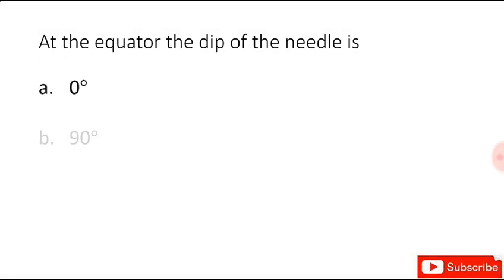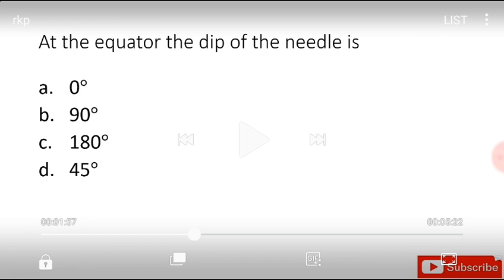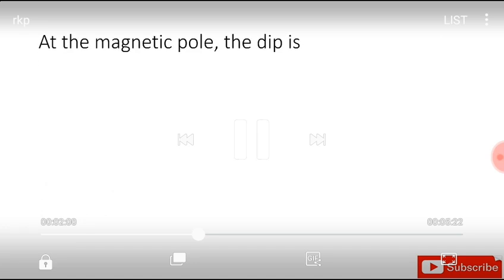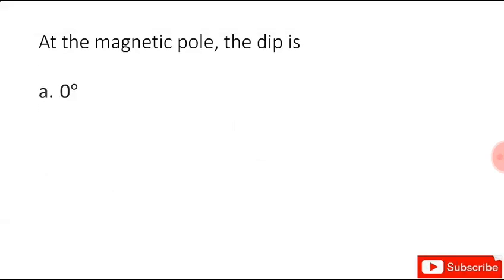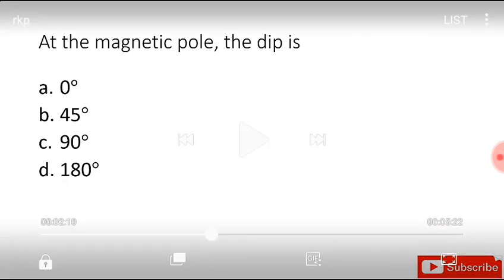And at the magnetic pole, the dip is 0 degree, 45 degree, 90 degree, or 180 degree, and the answer is of course 90 degree.